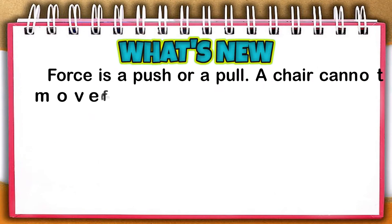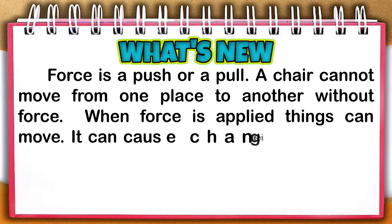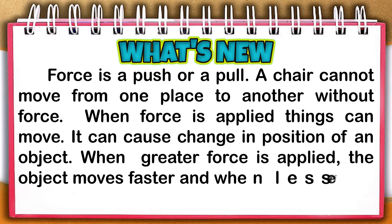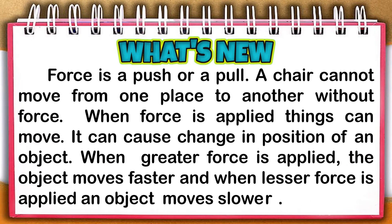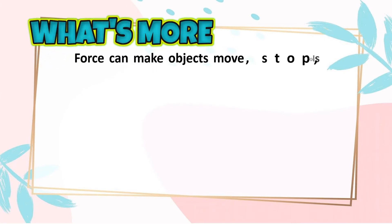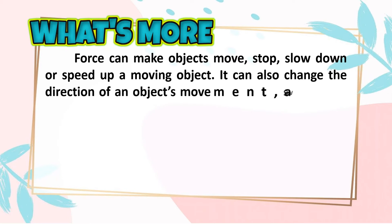Force is a push or a pull. A chair cannot move from one place to another without force. When force is applied, things can move. It can cause a change in position of an object. When greater force is applied, the object moves faster, and when lesser force is applied, an object moves slower. Force can make objects move, stop, slow down, or speed up a moving object.